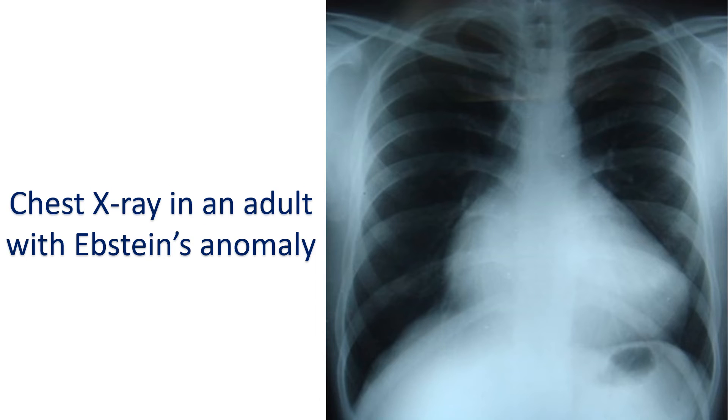X-ray in Epstein's anomaly may show right atrial enlargement and cardiomegaly. The lung fields are relatively oligemic.